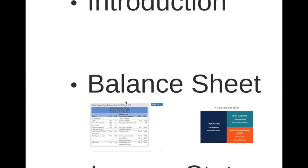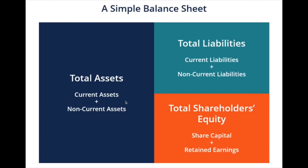Before we begin, I want to point out that I have no intention of testing your ability to put together any of these financial statements — balance sheet, income statement, or statement of cash flows. It is more important to know how to gather the necessary information from various statements to help you complete capital budgeting or equity valuation. We now cover the first of three financial statements, namely the balance sheet. In its simplest form, it has three components: assets, liabilities, and shareholders' equity. Total assets should always equal the sum of total liabilities and total shareholders' equity. If this formula is not balanced, there is something wrong with your balance sheet.